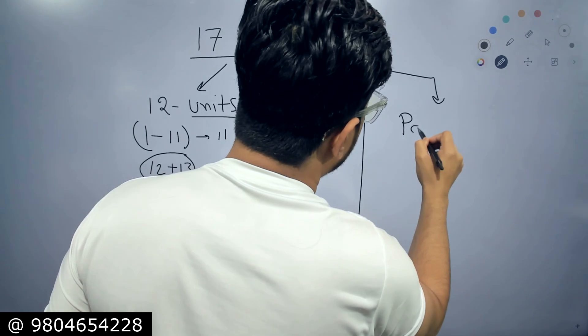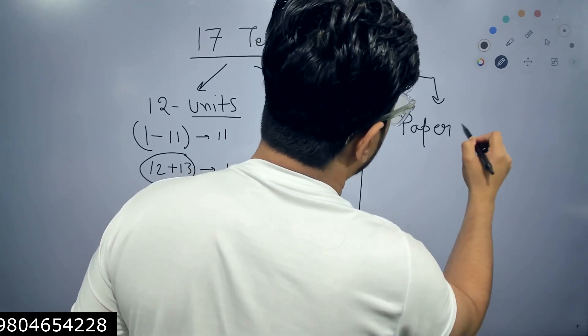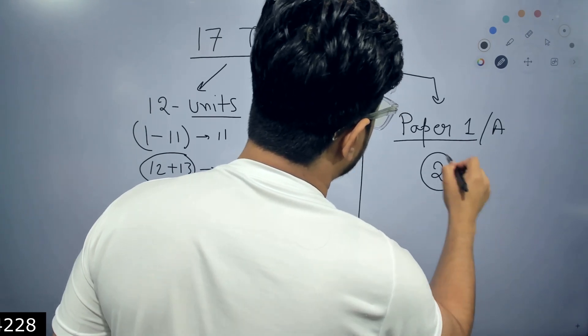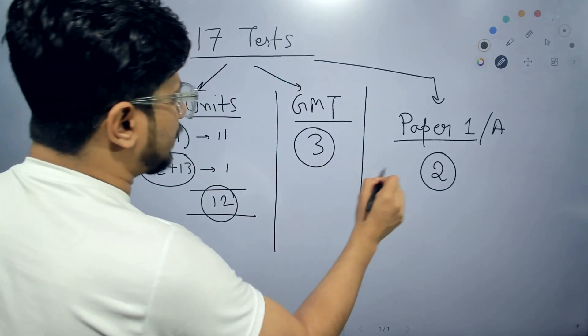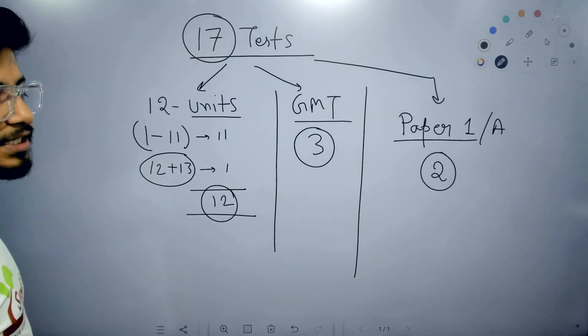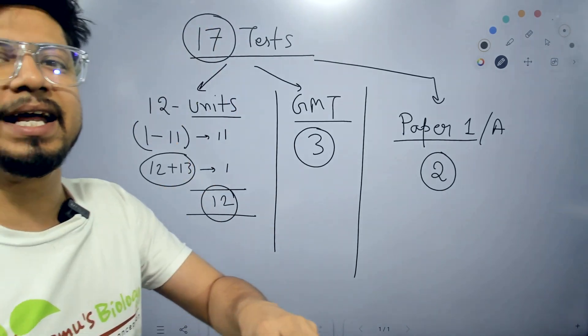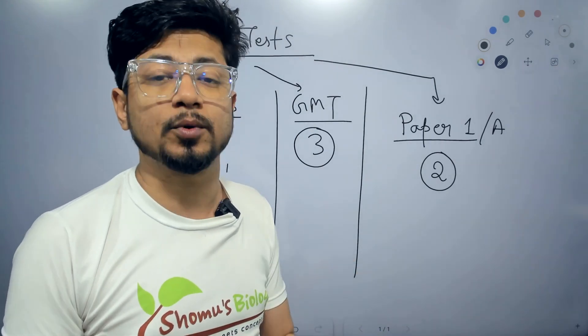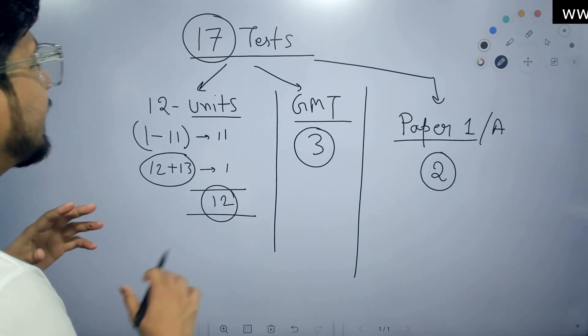And for paper 1 separately, we also do provide 2 such tests. So, we will get total 12 plus 3 plus 2, 17 tests in our CSI and Net Test Series Program or CSI and Net Online Test Series Program from Shomos Biology.